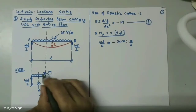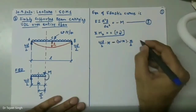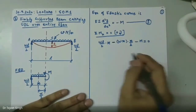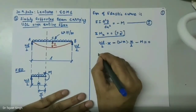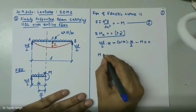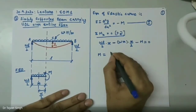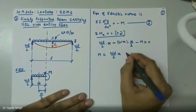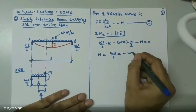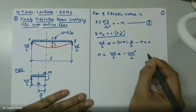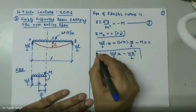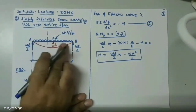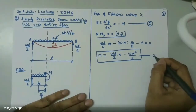Then the bending moment M — setting the sum to zero — gives us the equation of bending moment: M = WL/2 · X − WX²/2. This is the law of bending moment prevailing in beam AB. I call it equation number two.